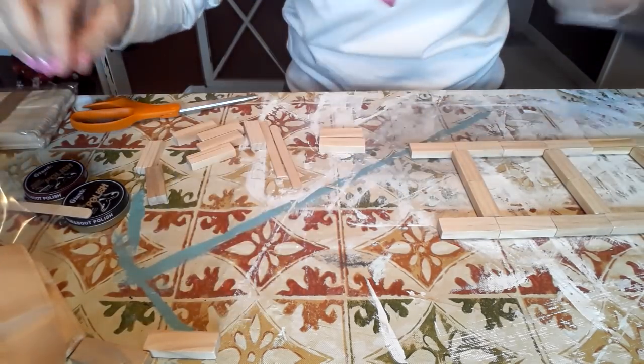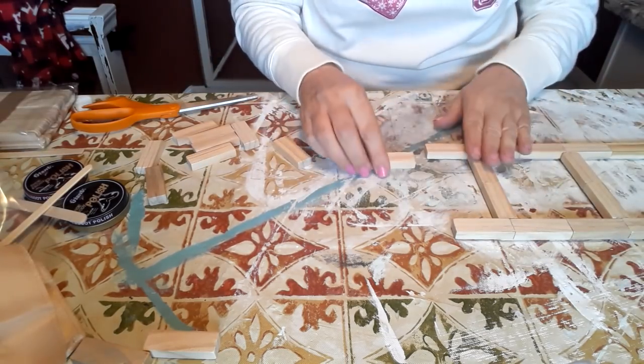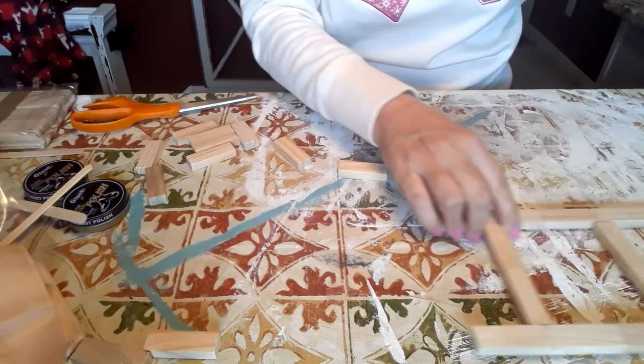You can see here, because the popsicle sticks are rounded, I actually had to cut them with my scissor. I made sure that they fit just between this piece here and right there. And then in some spots I added a little bit of extra glue just for some additional stability. So we can go ahead and we'll do a few pieces here together.